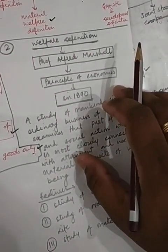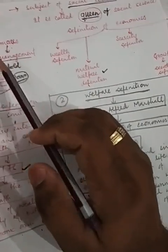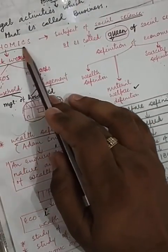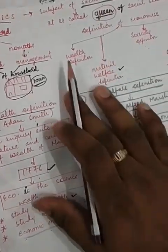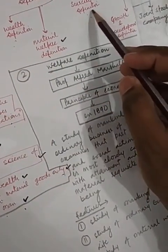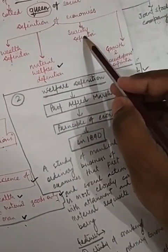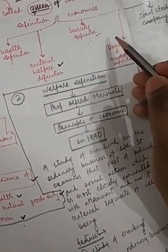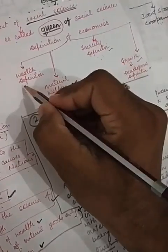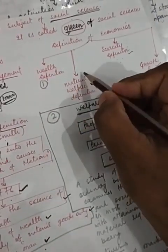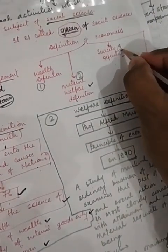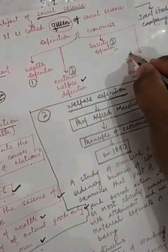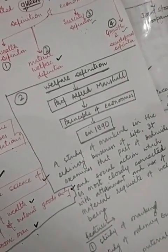In the last class, we already have seen the meaning and definition of economics — the introduction of economics, and how many types of definitions there are: wealth definitions, material welfare definitions, scarcity definitions, and the fourth one, growth and development definitions. We already have seen wealth definitions. Second, material welfare definitions we are going to see today. Scarcity definition we will see in the next class, and growth and development definition after that.